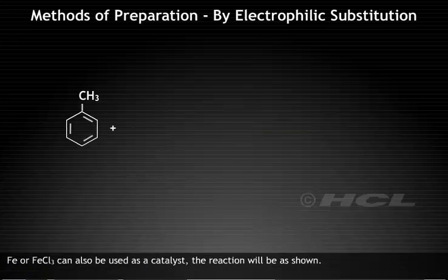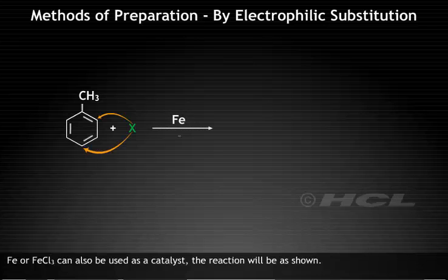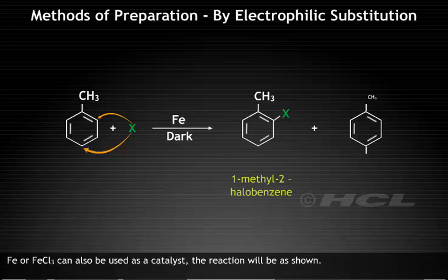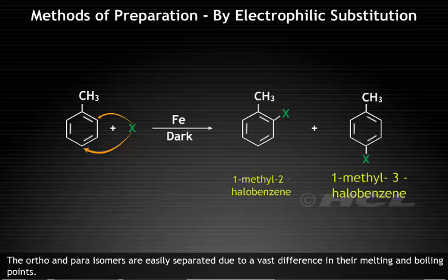Fe or FeCl3 can also be used as a catalyst. The reaction will be as shown. The ortho and para isomers are easily separated due to a vast difference in their melting and boiling points.